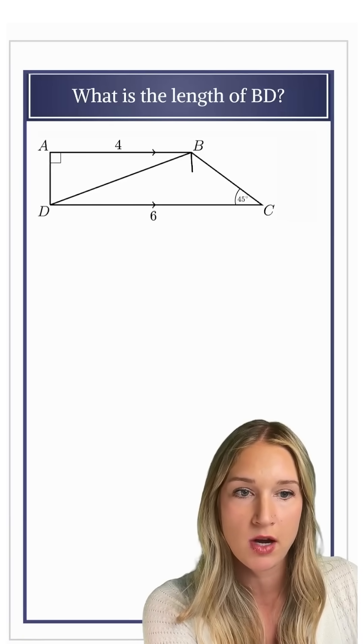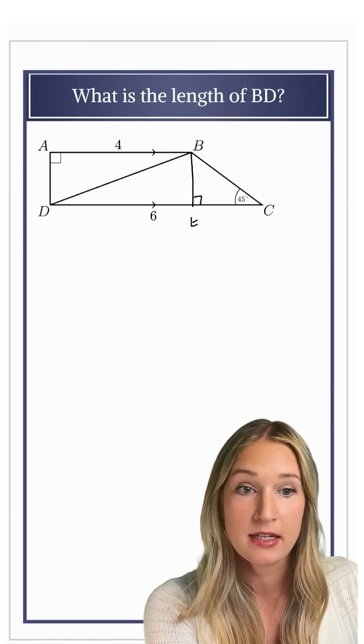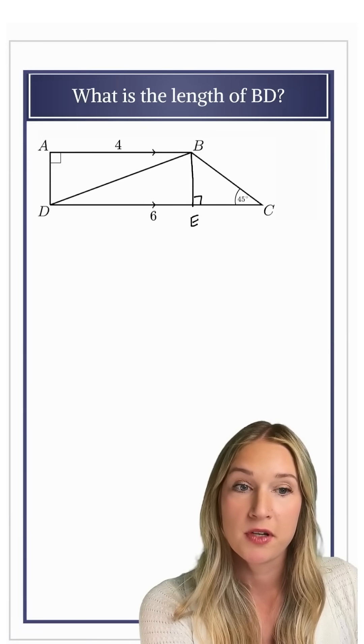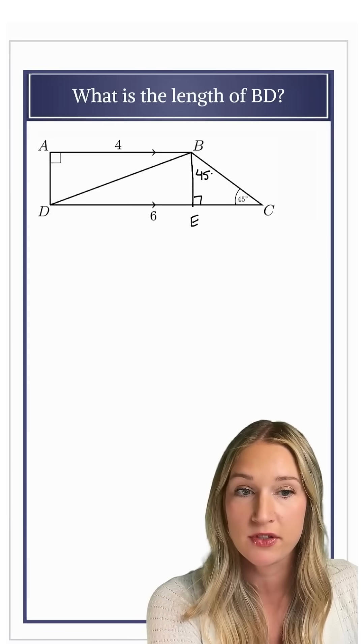So let me go ahead and drop a perpendicular down to DC, and I'll call this point maybe E. Now I've created a right triangle with a 45 degree angle, which means that the other angle of this triangle will also be 45 degrees.